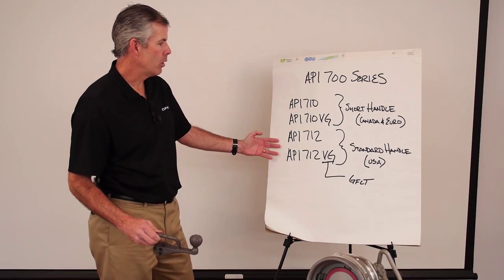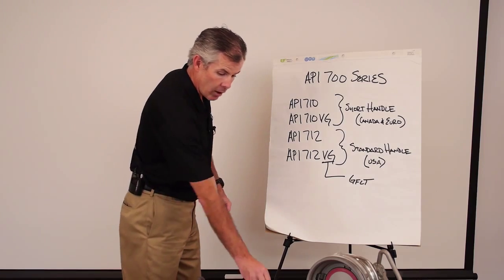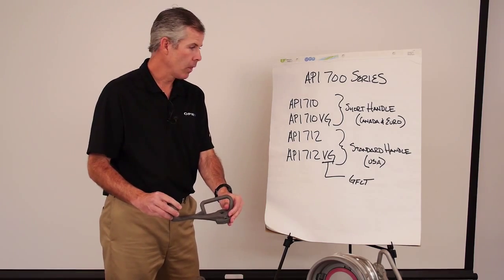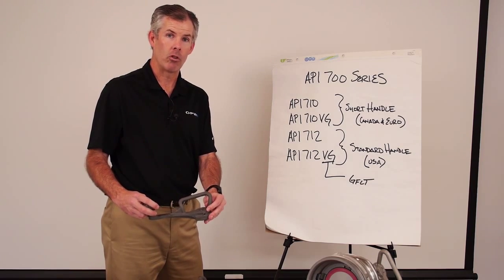In the U.S., primarily we use the 712 series. It has our standard handle. It's a little bit longer where you don't have the confined space inside the trailer.